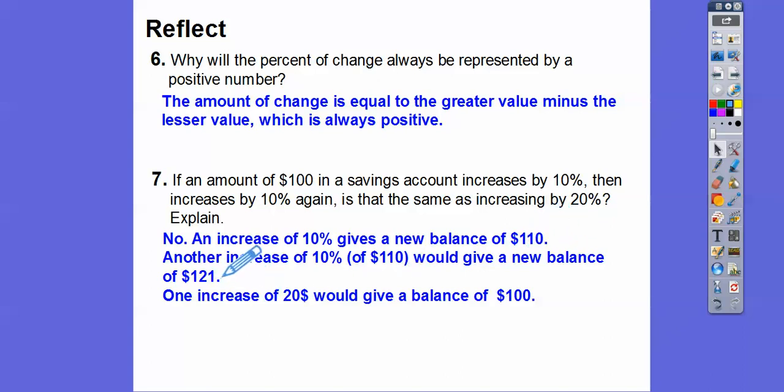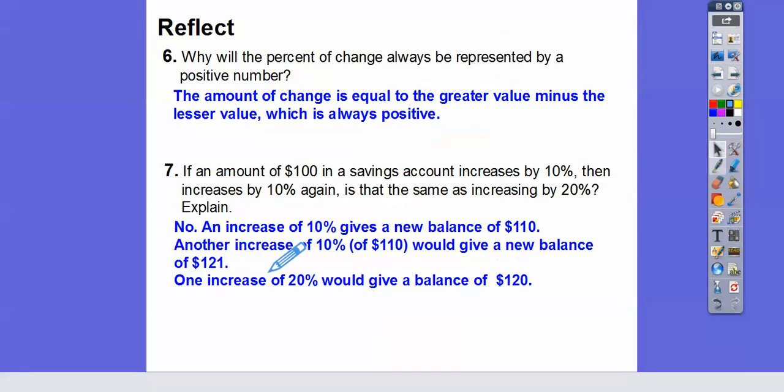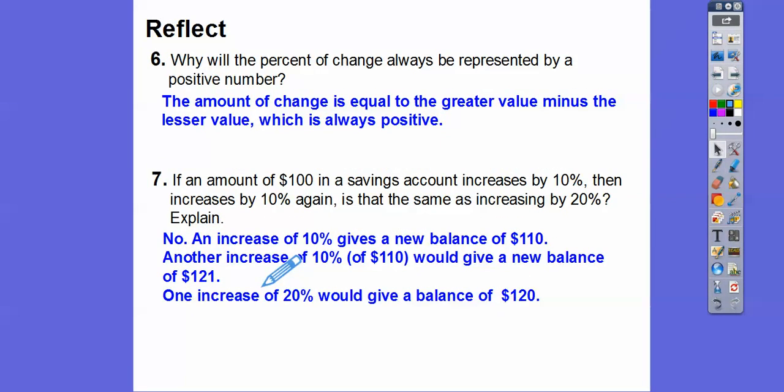An increase of 20% would give a balance of 120. So 20% of 100 is 20. So if we increased it by 20%, it would take us to 120. But when we increase it by 10%, then 10% again, it actually is a better rate because it gives us up to $121.